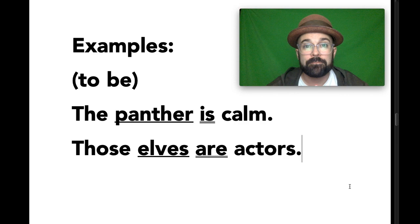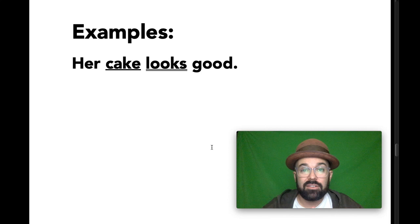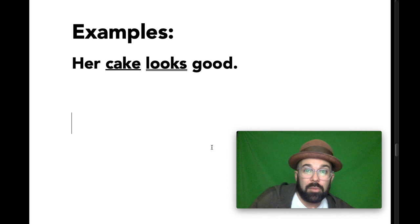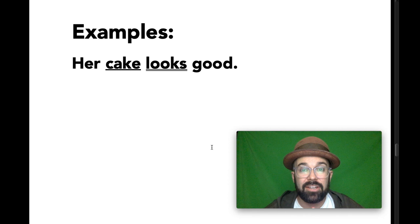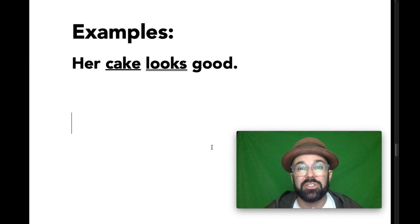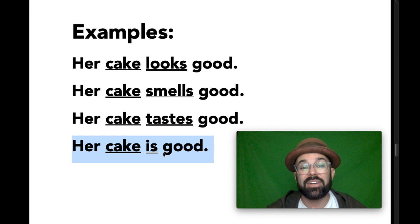Let's look at some other examples. 'Her cake looks good.' We have the simple subject underlined once and the verb underlined twice. 'Looks' is the present tense form of the verb to look with a singular subject, so it's on the linking verb list — and that is the first thing we need to check. The predicate 'looks good' has a word in it linked to the subject: good is an adjective describing the subject cake. So 'looks' links cake to good — it is a good cake. We can use other verbs the same way: 'Her cake smells good,' 'Her cake tastes good.' Ultimately, all of these mean the same thing as 'Her cake is good.'